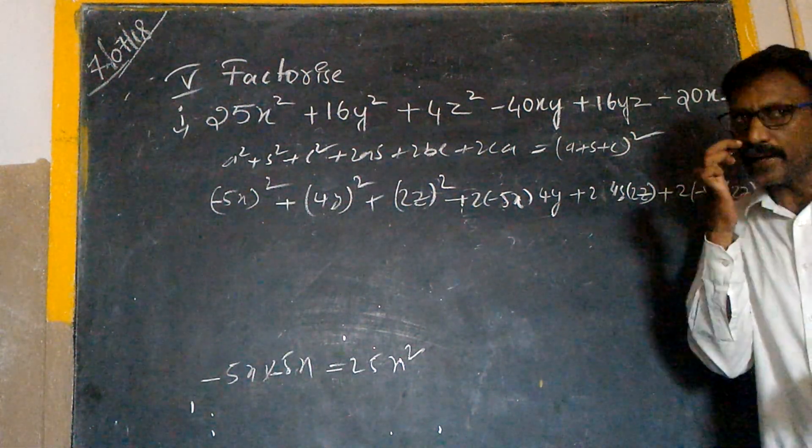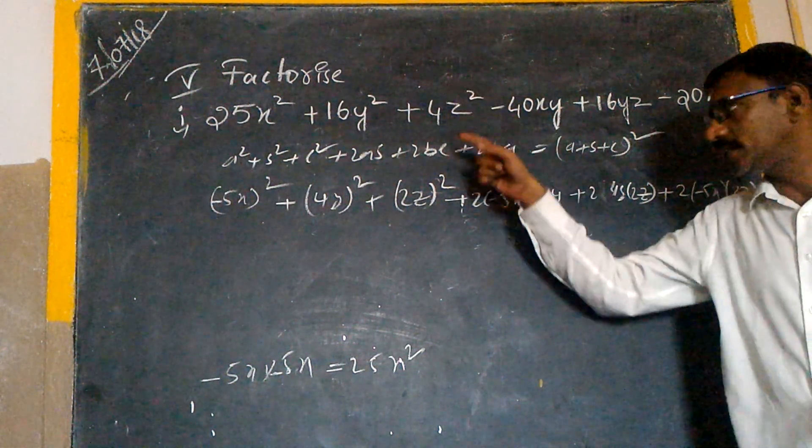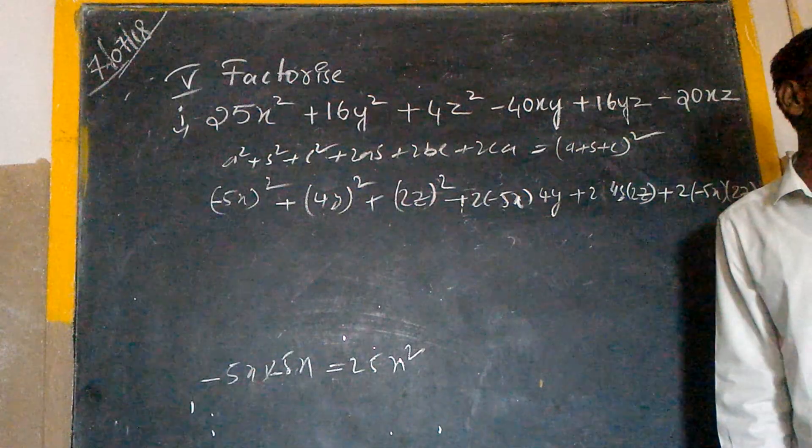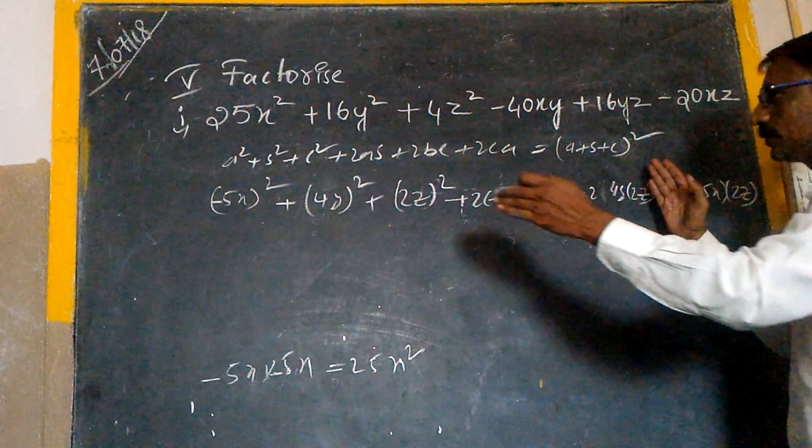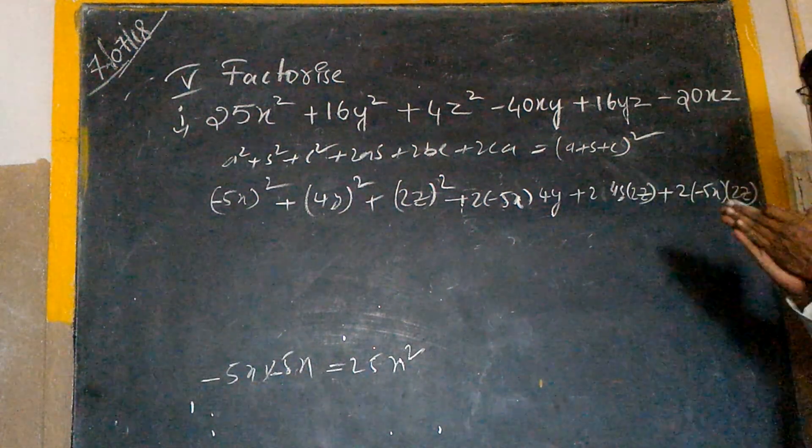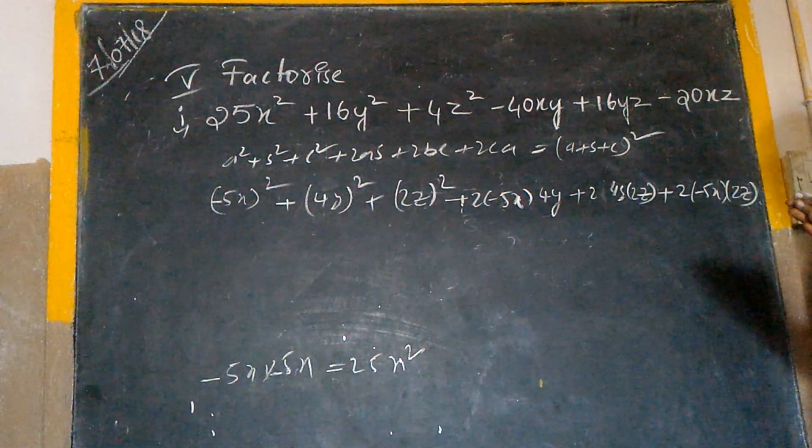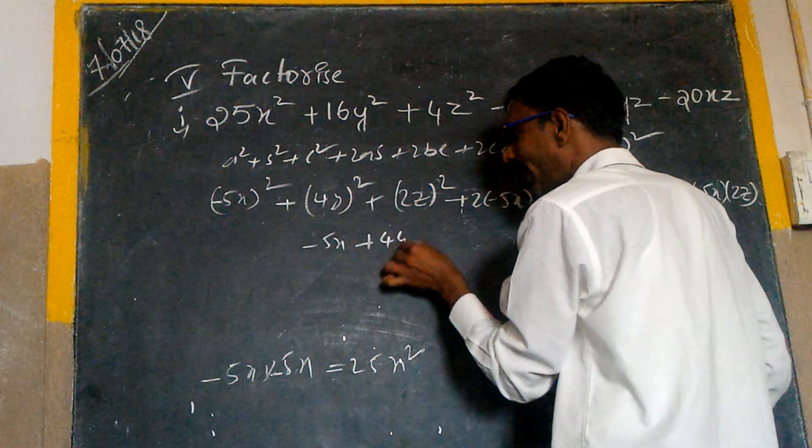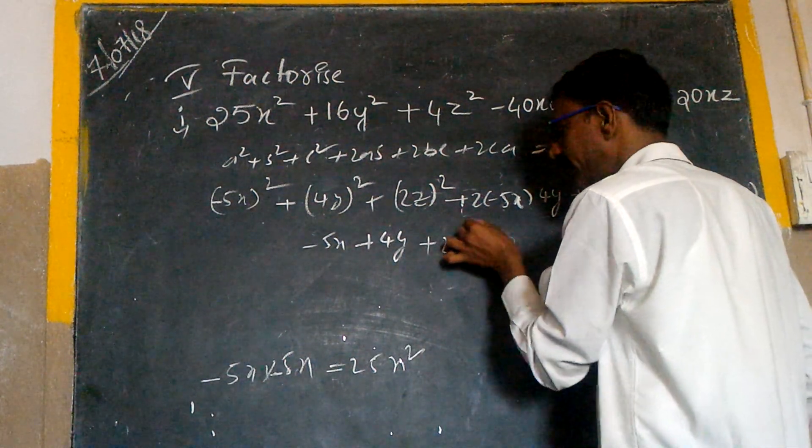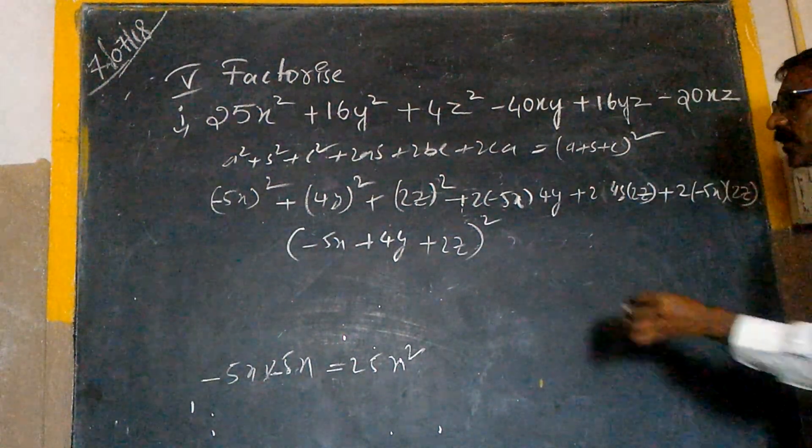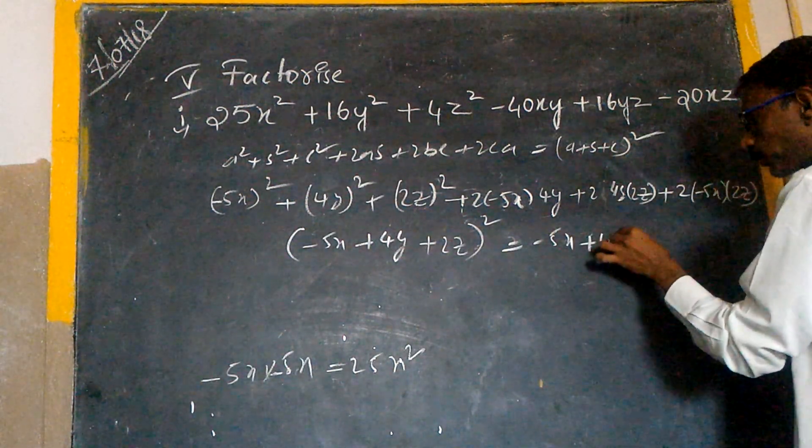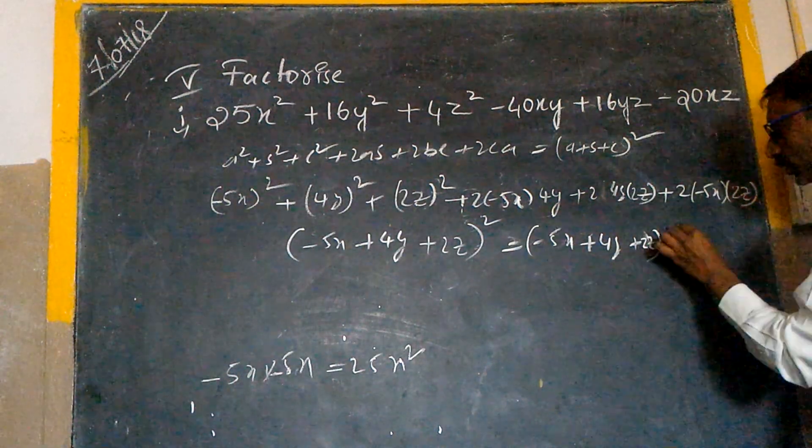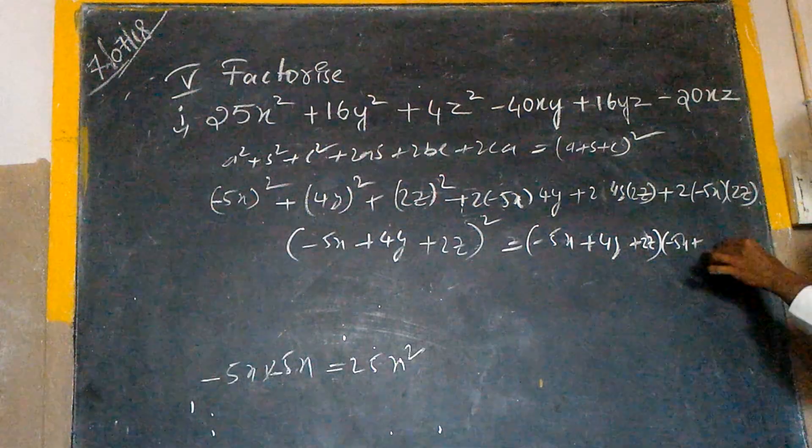Totally we conclude that this is in the form of a square plus b square plus c square plus 2ab plus 2bc plus 2ca. So this expression can be written in the form of a plus b plus c whole square. That means my a is minus 5x plus 4y plus 2z all square. This you can write minus 5x plus 4y plus 2z into again minus 5x plus 4y plus 2z. You got it?